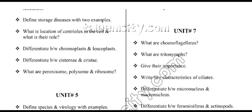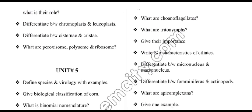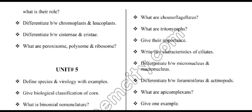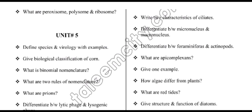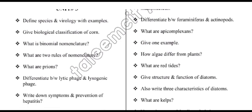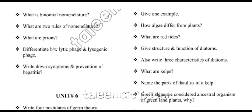From unit number seven, we have: dinoflagellates; diatoms and their importance; two characteristics of ciliates; differentiate between micronucleus and macronucleus; differentiate between foraminifera and actinopods; what are apicomplexans and give one example; how algae differ from plants; what are red tides; structure and function of diatoms; characteristics of diatoms.